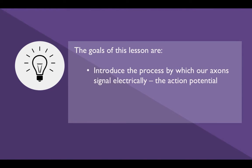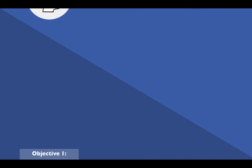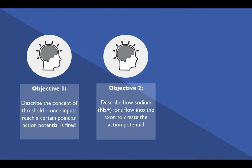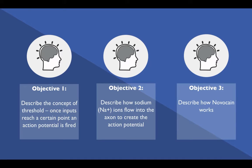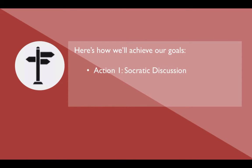The goals of this lesson are to introduce the process by which our axons signal electrically — the action potential — and to explore the consequences of disrupting the action potential. Students should be able to describe the concept of threshold, describe how sodium ions flow into the axon to create the action potential, and describe how Novocaine works. We'll achieve these goals through a Socratic discussion and by modeling the action potential.